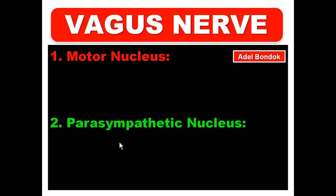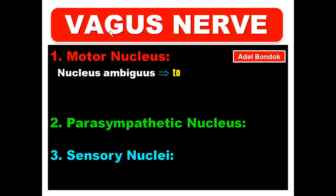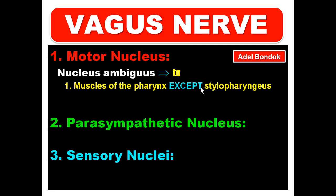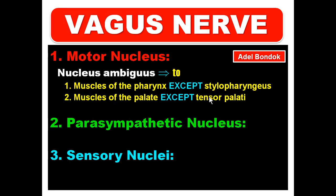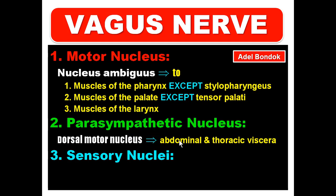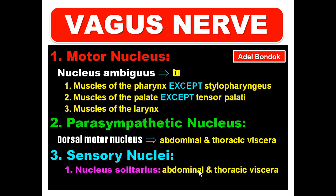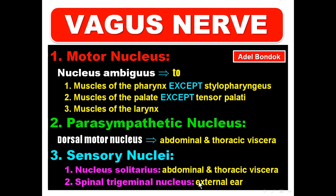Now, the vagus nerve. It has four nuclei: one motor nucleus, one parasympathetic nucleus, and two sensory nuclei. The motor nucleus is the nucleus ambiguus; its motor fibers supply muscles of the pharynx except stylopharyngeus, muscles of the palate except tensor palatii, and muscles of the larynx. The parasympathetic nucleus is the dorsal motor nucleus of the vagus, supplying abdominal and thoracic viscera. The sensory nuclei are nucleus solitarius — receiving general visceral sensation and taste from the posterior tongue and epiglottis — and the spinal trigeminal nucleus for somatic sensation from the external ear.